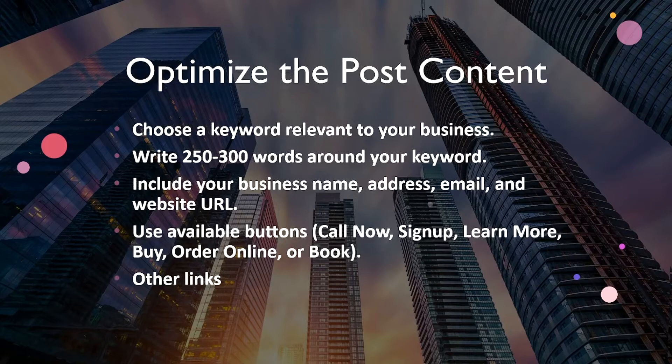Now let's look at how to optimize your post content. First, choose a keyword relevant to your business. If you're a dentist and one of your services is dental implants, write your post using the keyword 'dental implants.' You're going to write 250 to 300 words around your keyword — don't just write one or two sentences. You want to persuade your audience, give enough content that Google can figure out what you're talking about, and rank according to the keywords you use.